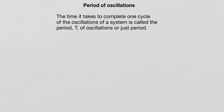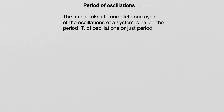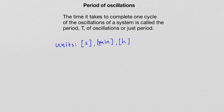Another quantity associated with oscillations is the period. The period of oscillations is defined as the time it takes to complete one cycle. The period is labeled with capital T. The units in which the period is measured are seconds, minutes, or hours — but the base units are seconds.